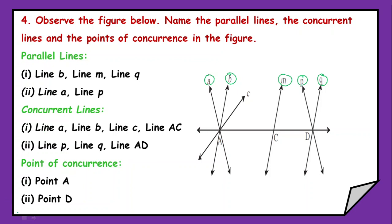Then next we have concurrent lines. Now what are concurrent? They meet at a single point or they emerge from a single point. So now if I talk about from point A, line A, B, C as well as this line AD. They pass through the single point A. So these are concurrent lines.